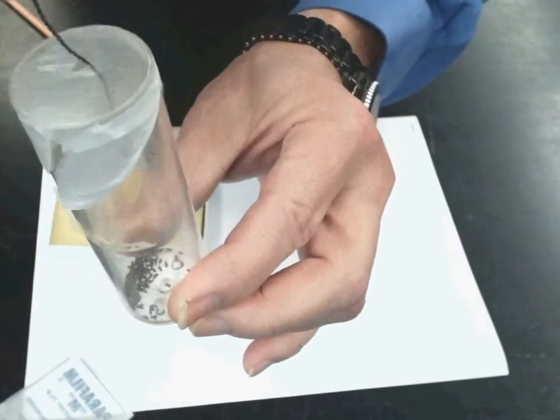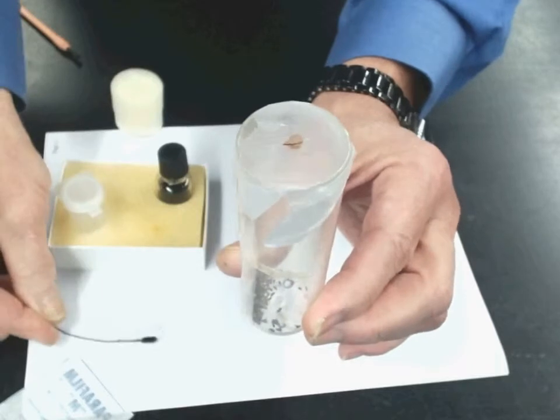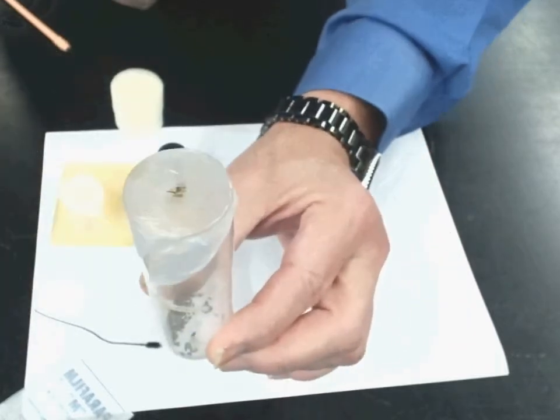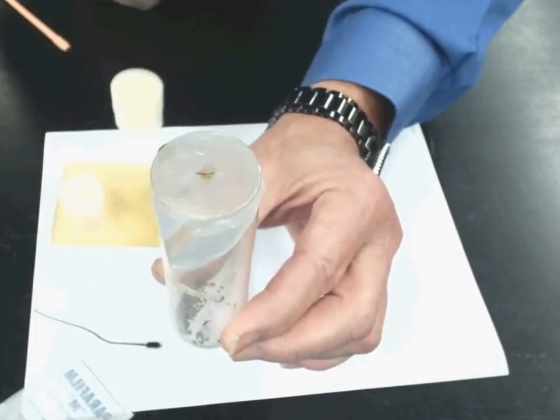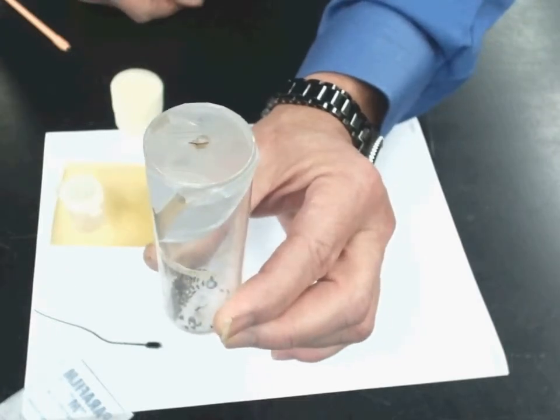Now you remove the wand. And now you're ready to pour the flies out on a three by five card so you can begin to determine their gender.